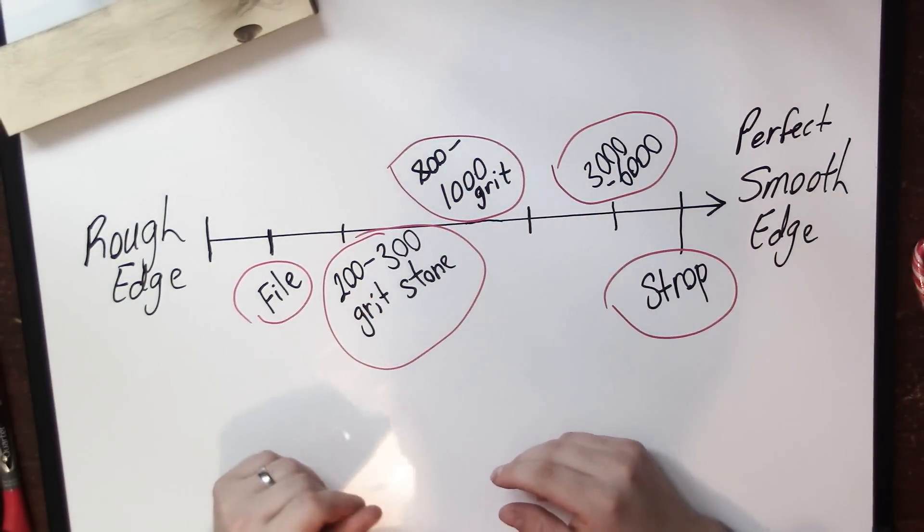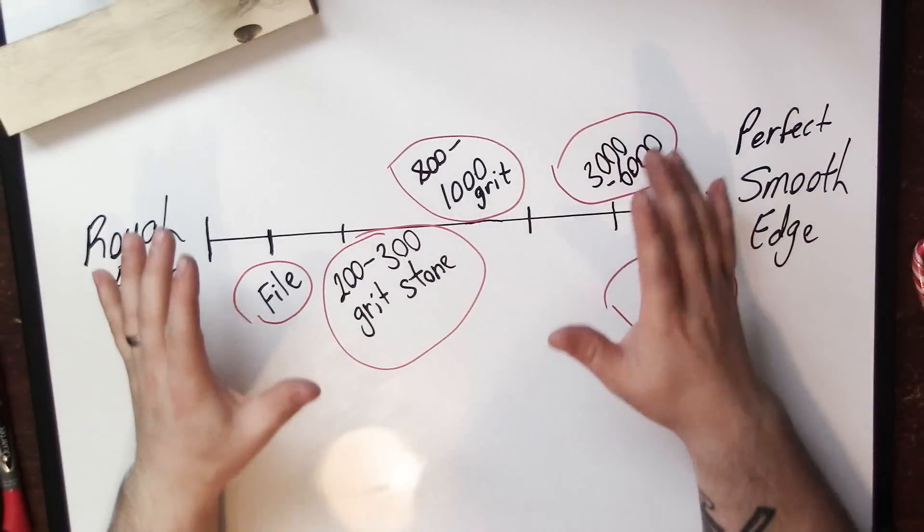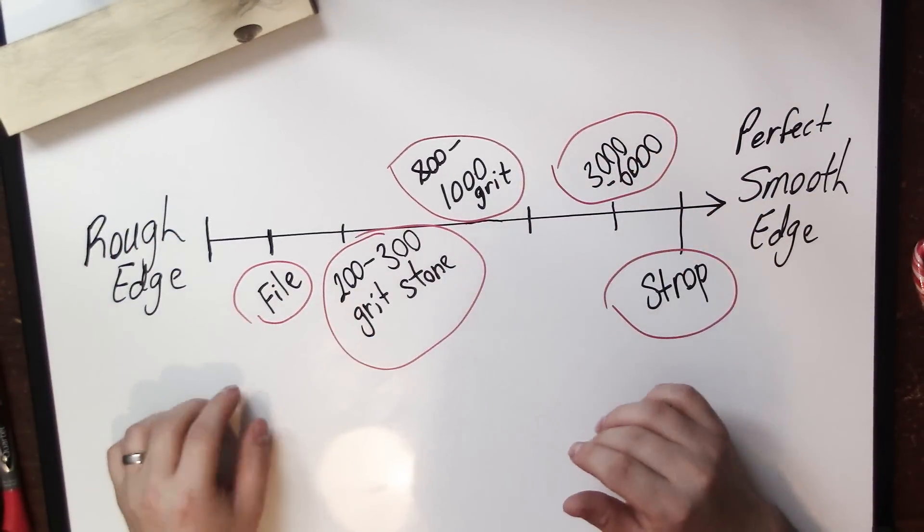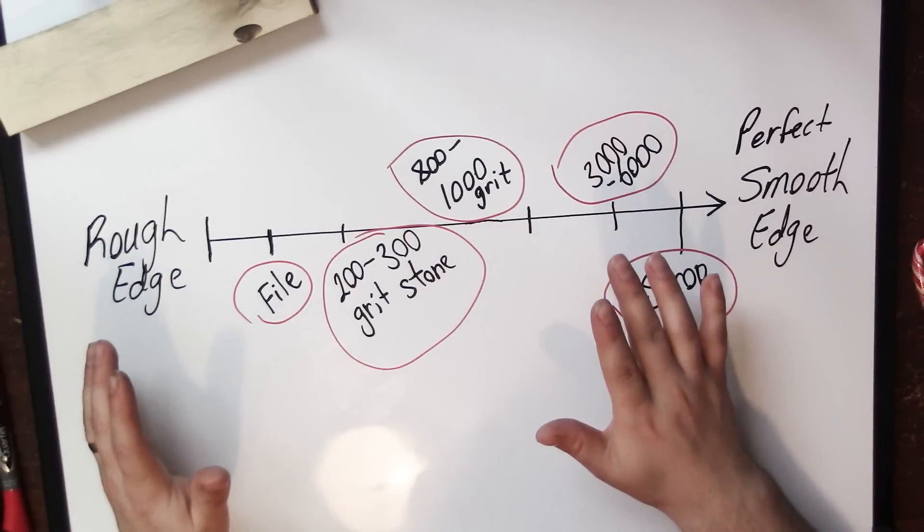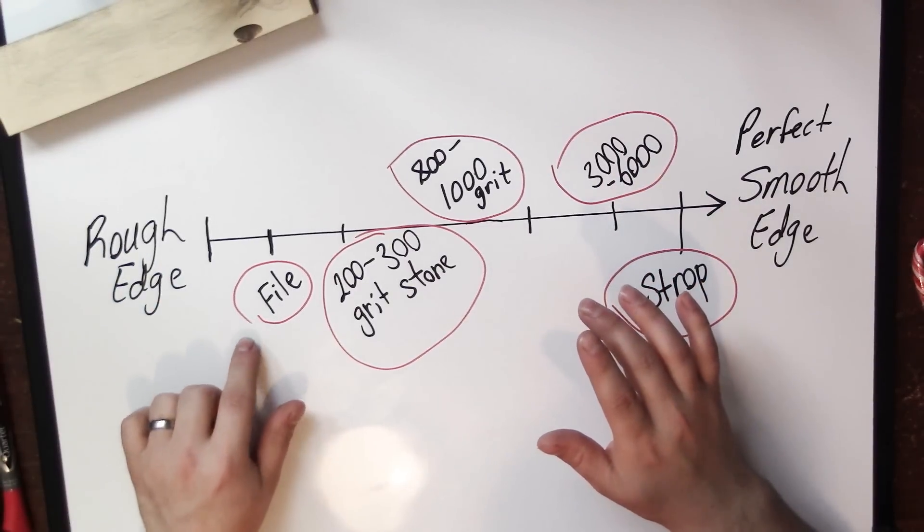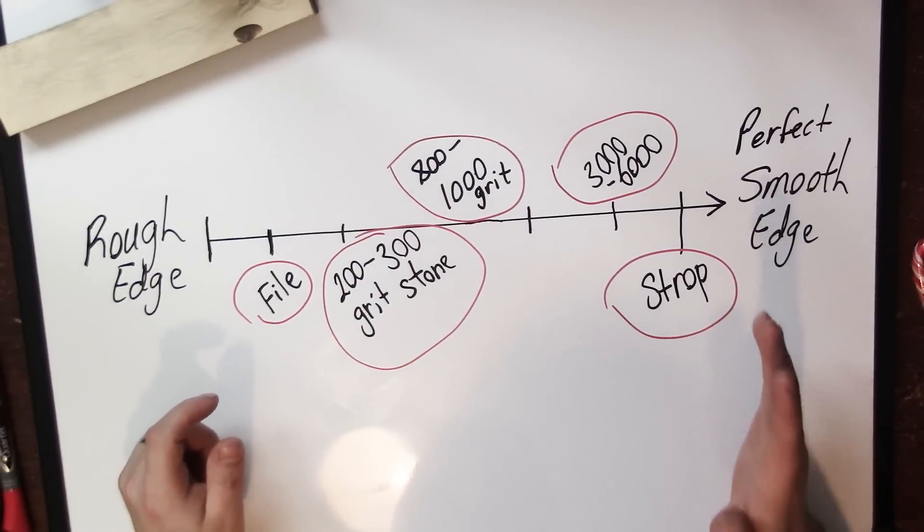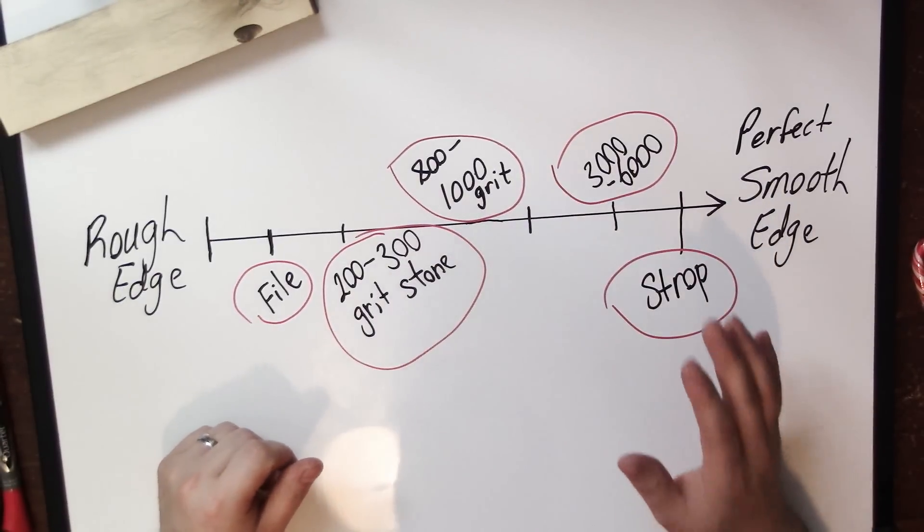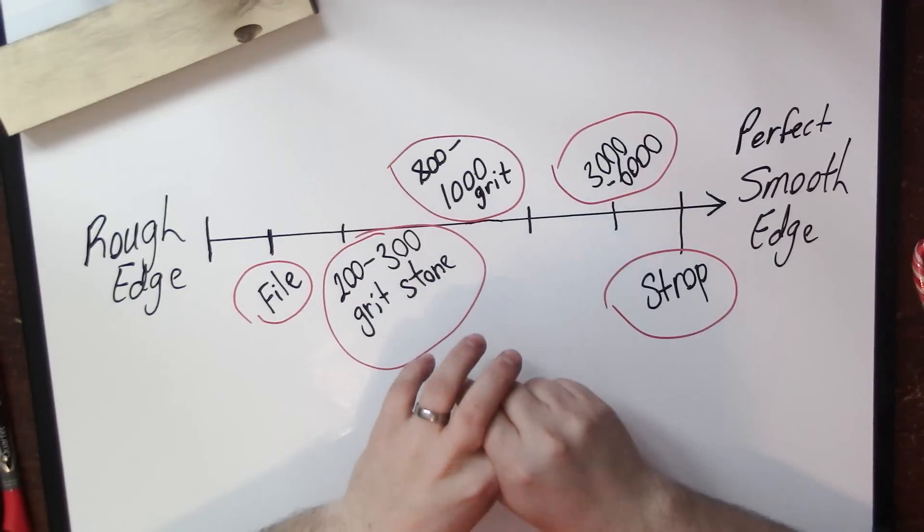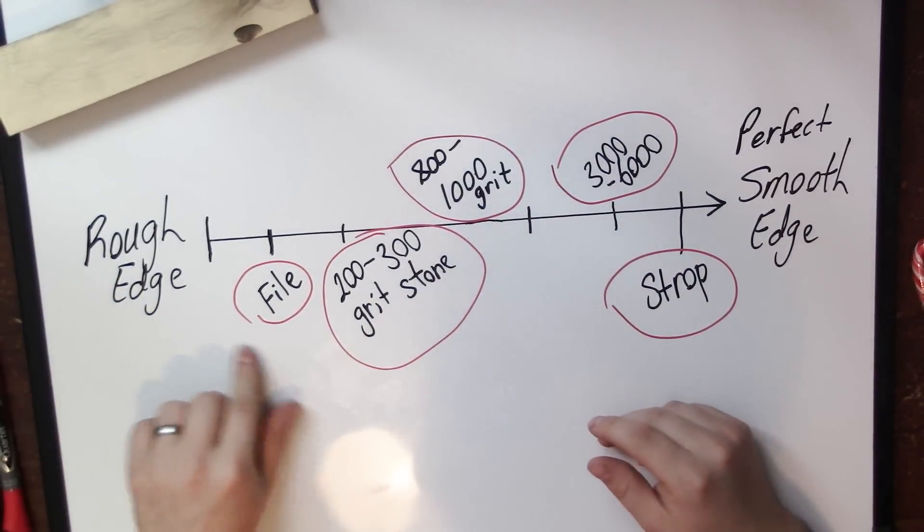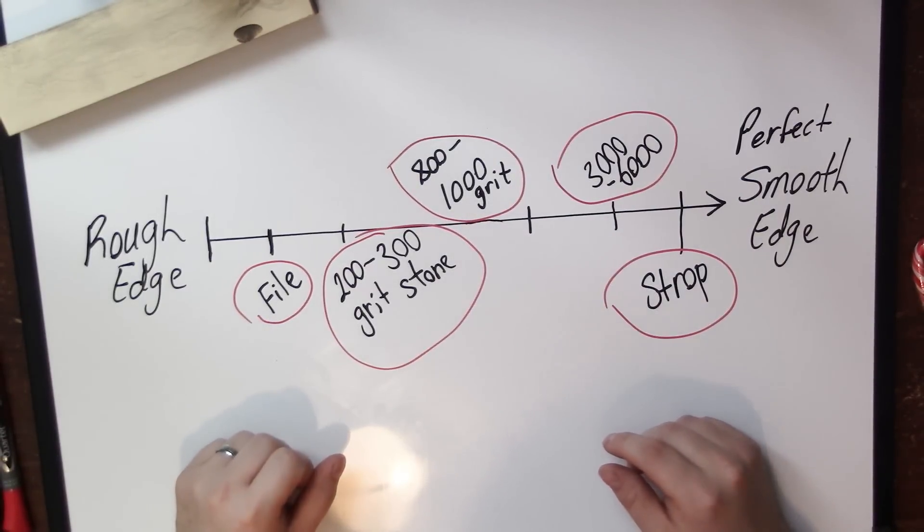If you have these pieces you can move very fast, very efficiently, right from a beat up edge with dents and chips where you can establish your edge with a file, move through these stages very quickly and have a shaving sharp edge. Hope you enjoyed this video guys. Please like the video, comment down below if you have any questions, I'd love to clear some things up for you. Subscribe to my channel if you haven't already, let me know how you like this format. We'll see you in the next video.